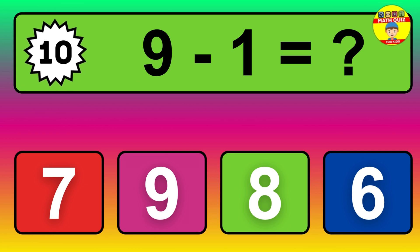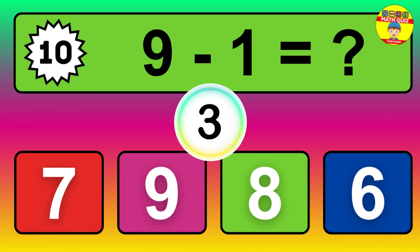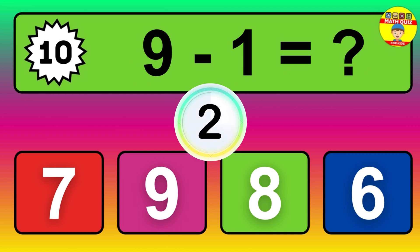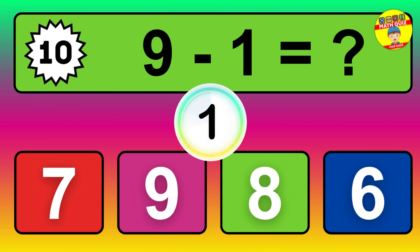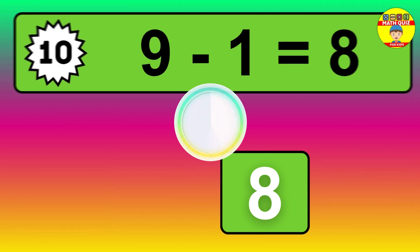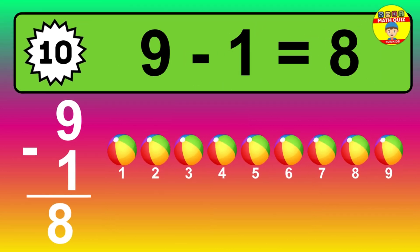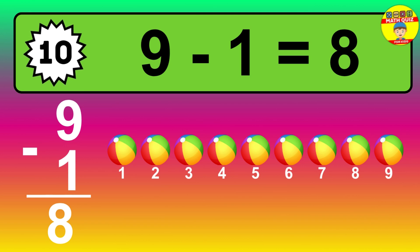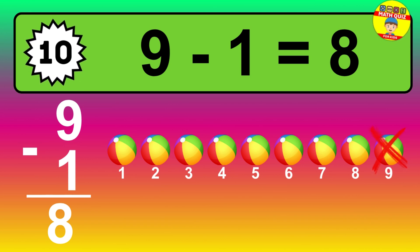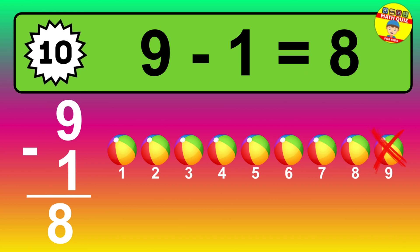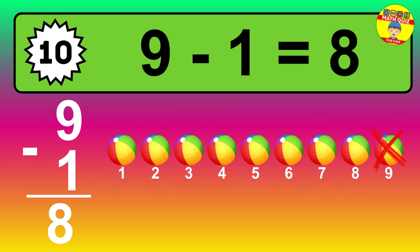Question ten: nine minus one equals what? So the answer is nine minus one is eight. Let's count it. One, two, three, four, five, six, seven, eight.